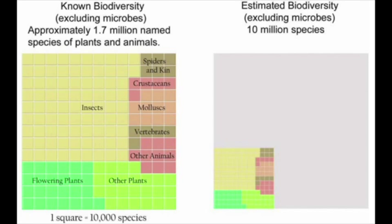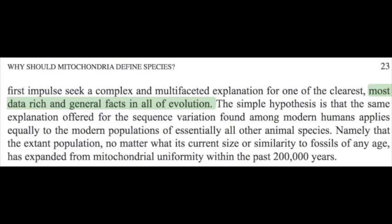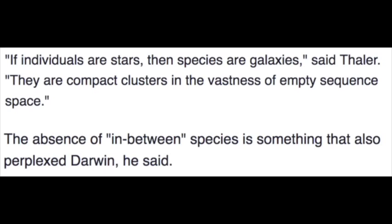This was so shocking for the scientists working on the project that they said, 'This conclusion is very surprising and I fought against it as hard as I could.' They go on to say, 'This study is one of the clearest, most data-rich, and general facts in all of evolution — that the extant population, no matter what its current size or similarity to the fossils of any age, has expanded from mitochondrial uniformity. If individuals are stars, then species are galaxies. They are compact clusters in the vastness of empty sequence space.'